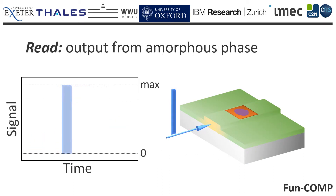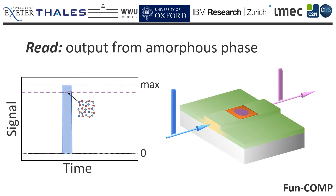After amorphization, a read light pulse reveals the high output level, which is strictly correlated with the degree of amorphization reached by the write operation.